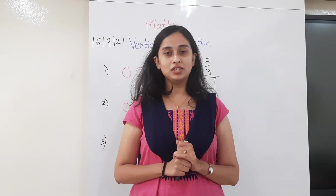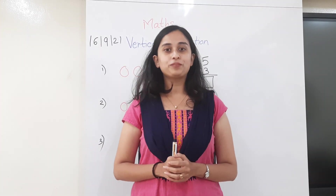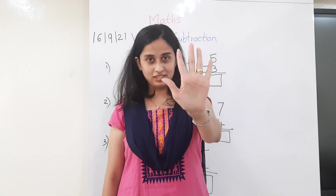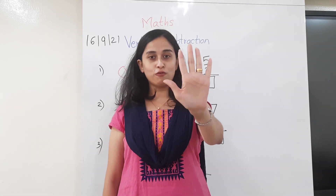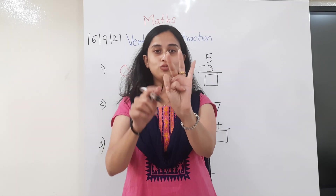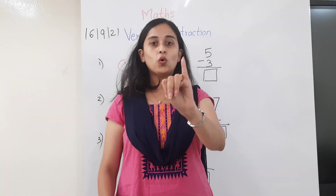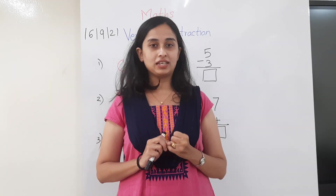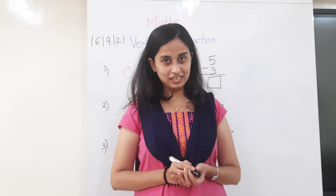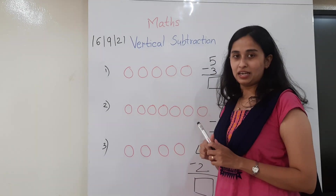So we have already learnt what subtraction is, so let us first revise. If I have 5 fingers and I have to take away 4 — that is 1, 2, 3 and 4 — how many are left? Only 1. So we have completed this in our earlier class, and today we are going to learn vertical subtraction.